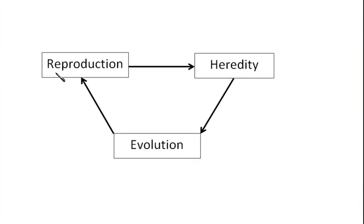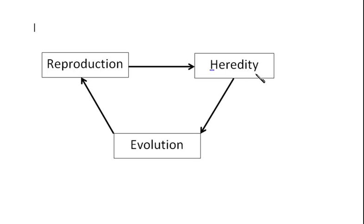During reproduction, new organisms are generated from the parental organisms. For this process to occur, the genes or characteristics are to be transferred from one generation to another in the form of genes. This transfer of genes is known as inheritance, and this inheritance is termed as Heredity — the transmission of various characters from one generation to the next generation.